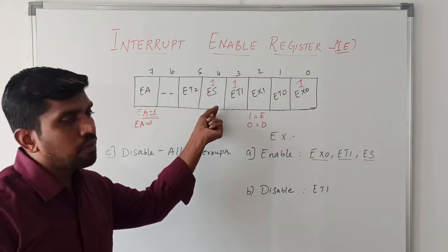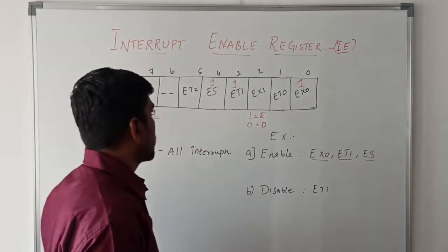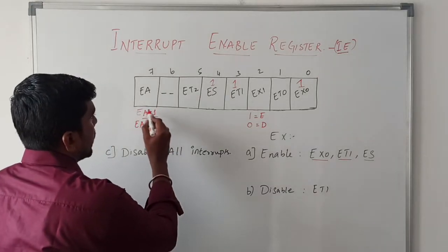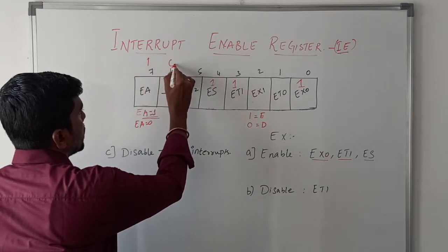This is the 8-bit value. Based on this 8-bit value only, the microcontroller will turn on the interrupt or turn off the interrupts. First you write the 8-bit value: bit seven is set to 1, 6th bit 0, 5th bit 0, 4th bit 1.